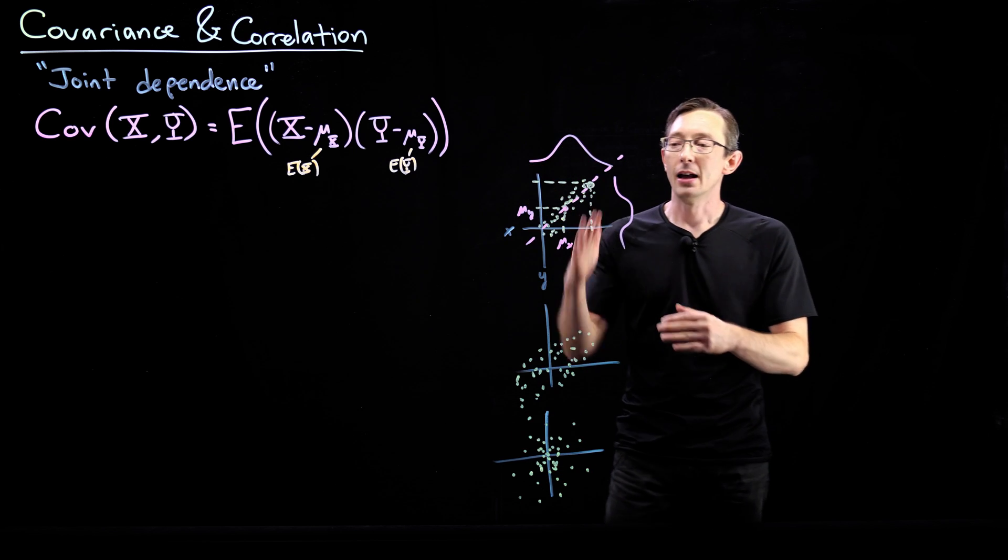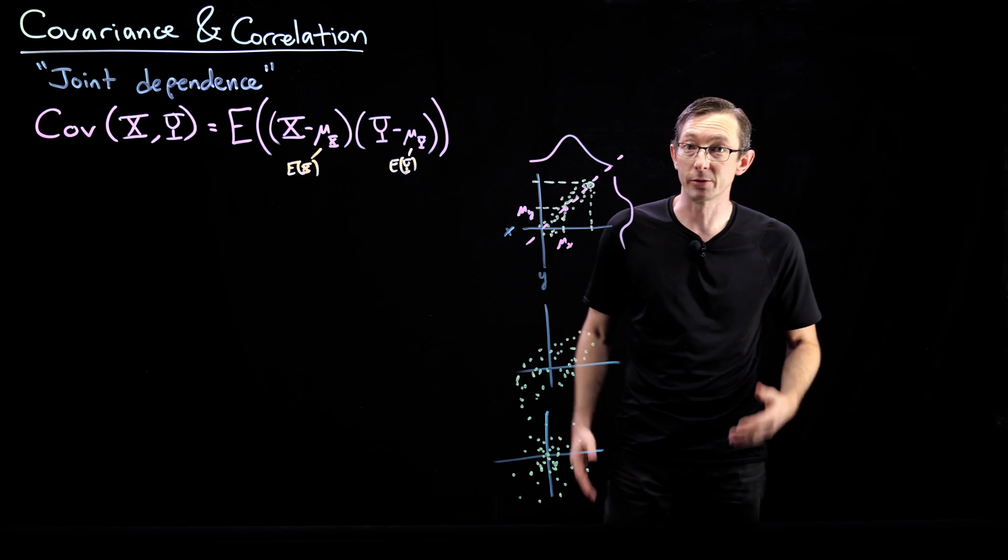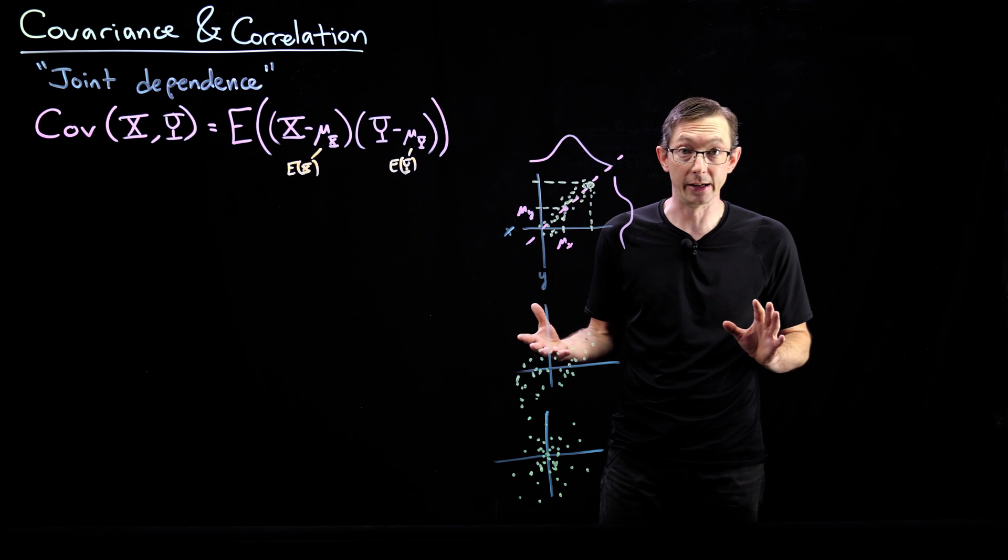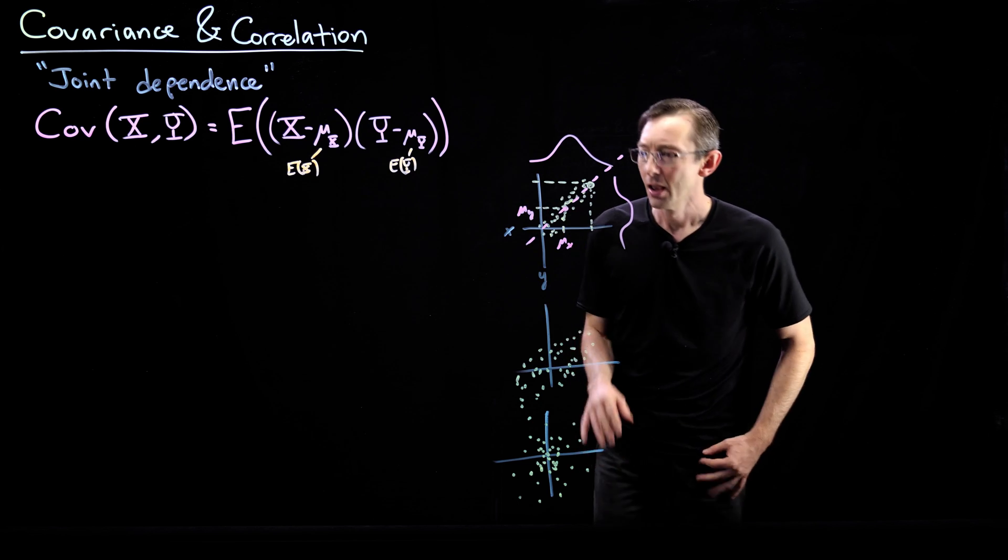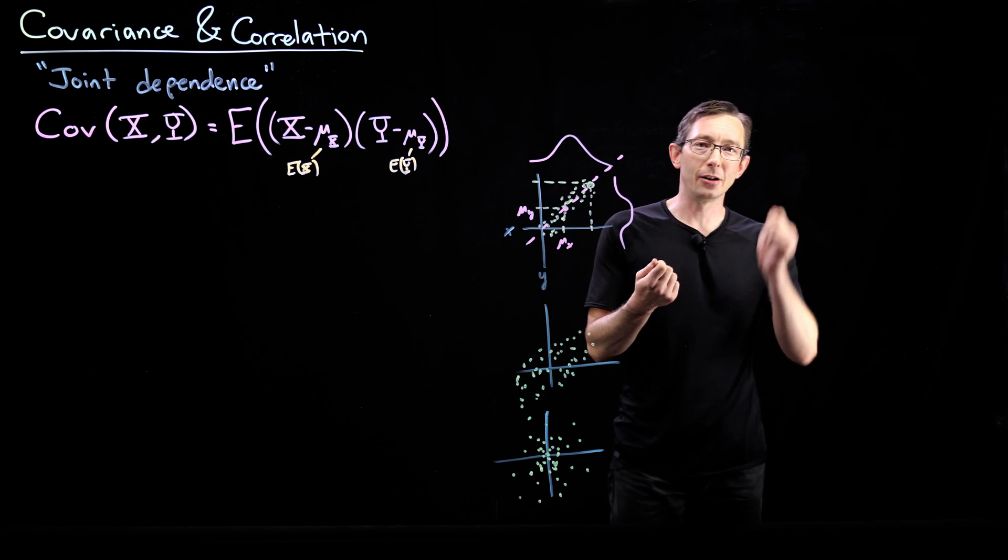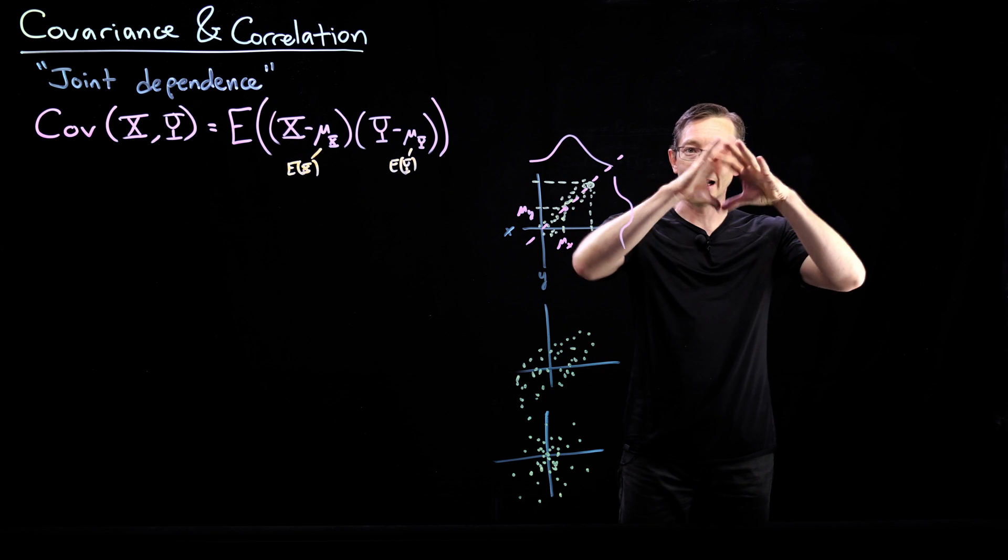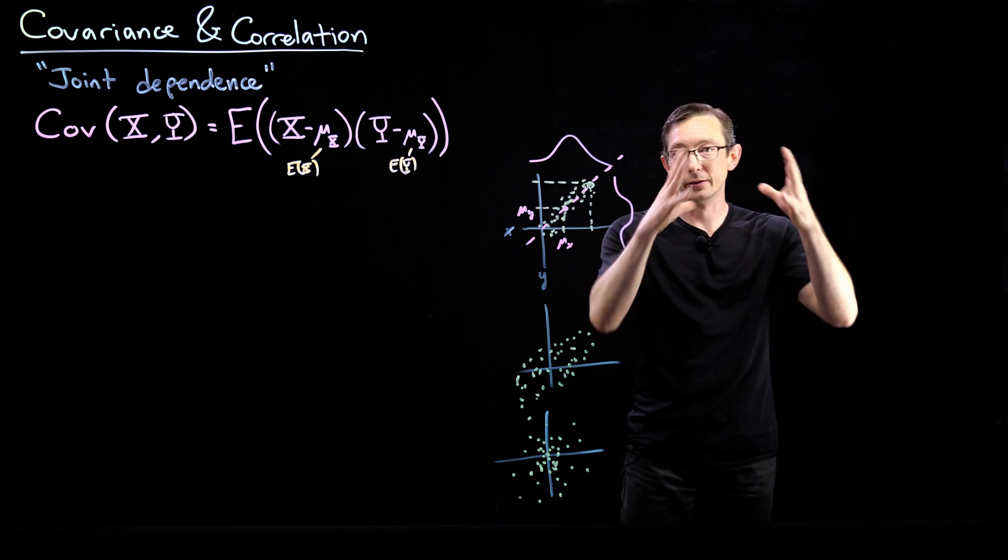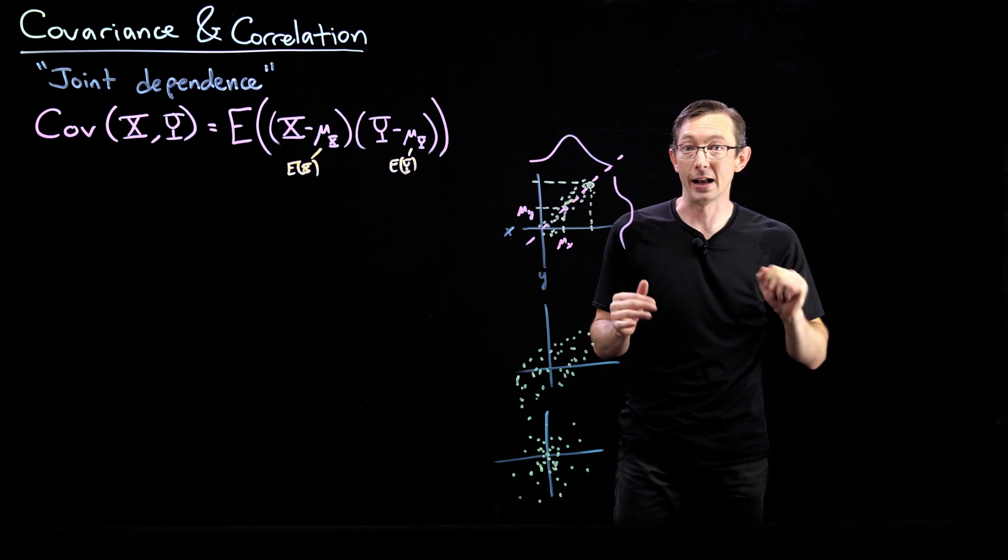And I use this example of these two-dimensional Gaussian distributions, joint probability distributions in x and y, where you can imagine throwing a dart at a board, you get a Gaussian pattern of density of where your dart actually hits.